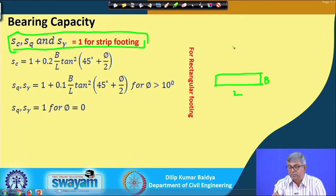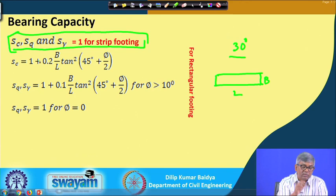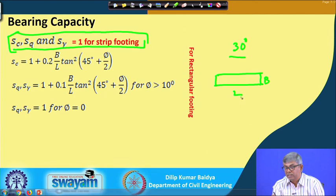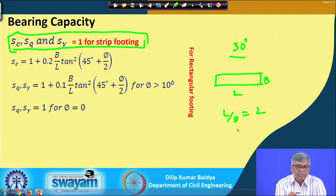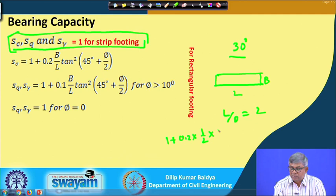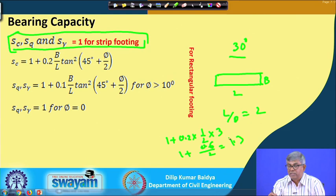For shape factors, when it is a strip footing, sc, sq, sγ are all equal to 1 - reducing the equation to the basic form cNc + qNq + 0.5γBNγ with no shape correction. For a rectangular footing, sc = 1 + 0.2(B/L)tan²(45° + φ/2). For example, for L/B = 2 and φ = 30°, sc = 1 + 0.2 × (1/2) × tan²(60°) = 1 + 0.2 × 0.5 × 3 = 1.3. So for a rectangular footing with L/B = 2, the shape factor sc becomes 1.3.